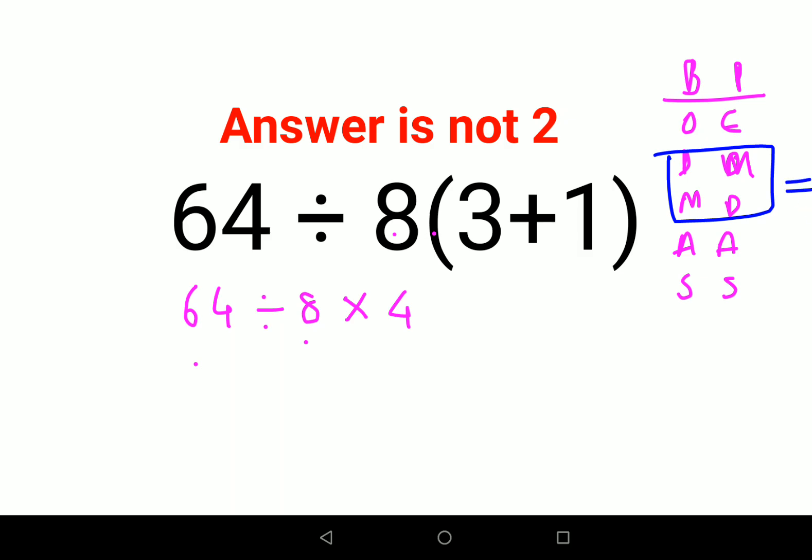So here, if you end up doing the division first, your answer comes out to be different. And if you do the multiplication first, then the answer comes out to be 2. So now in that case, what will you do? Please understand, when you have a question which just has division and multiplication as part of your operations, you just go from left to right.